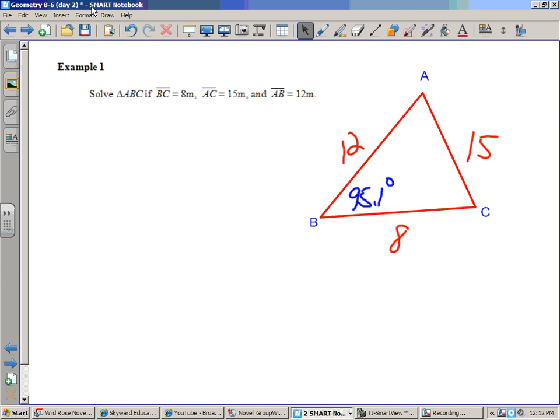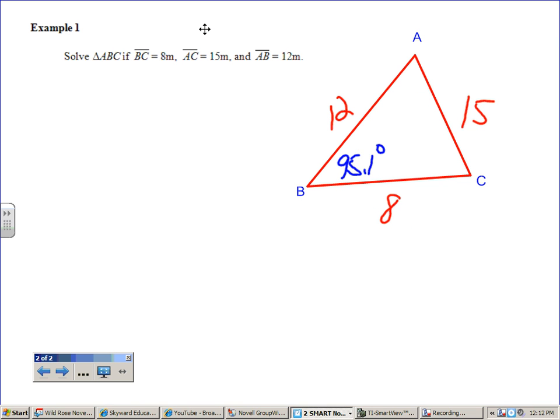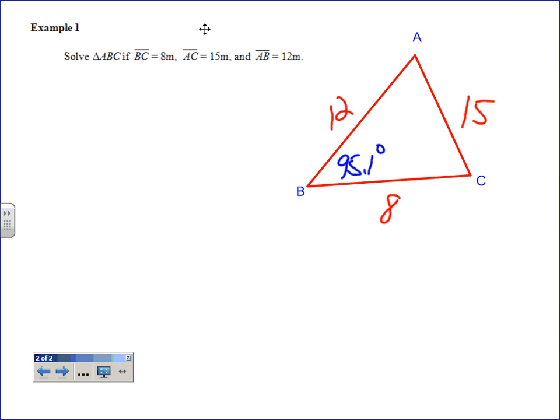All right, so finishing up this problem, we already did the law of cosines to find out that 95.1 is angle B. Remember, I do tell you to go for the biggest angle when you have this setup of three sides. And then once we get to law of sines, because we have our pair now, and obviously our pair here is 95.1 as far as the degrees is concerned, and 15 as far as the side is concerned.